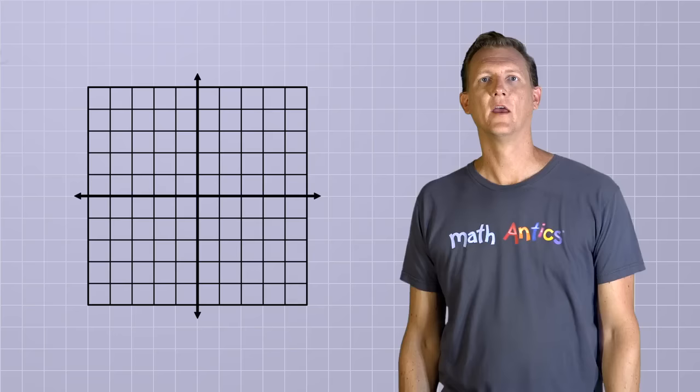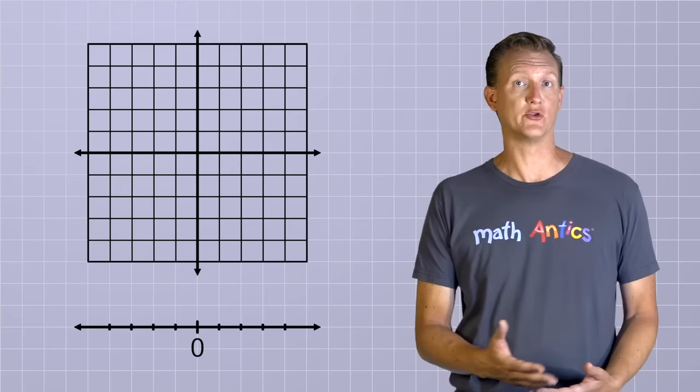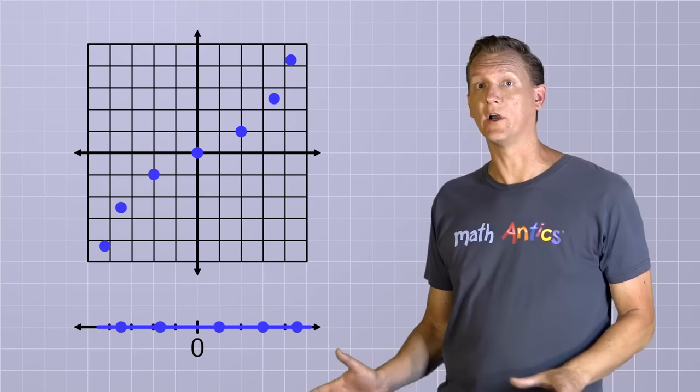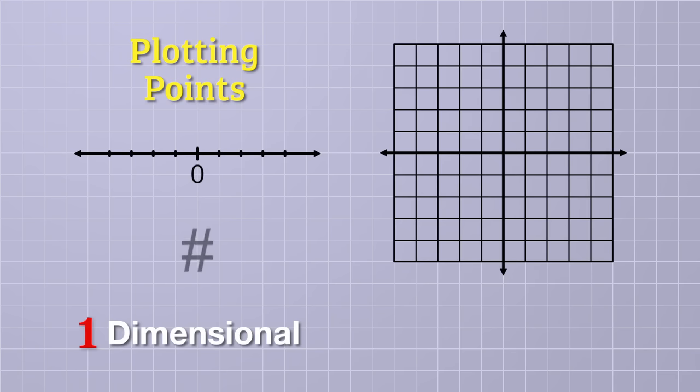What we have now is a number plane. It's basically like a two-dimensional version of a number line, but that second dimension makes it much more useful. With a simple one-dimensional number line, we could show where various numbers were located along that line by drawing or plotting points. But no matter how many points we plot, they're always on the same line. But with a two-dimensional number plane, we can plot points anywhere in that 2D area, and that opens up a whole new world of possibilities.